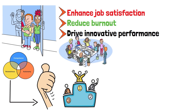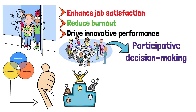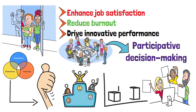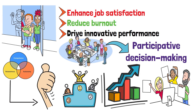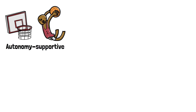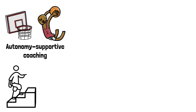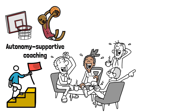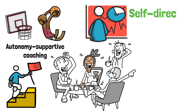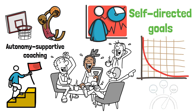Leaders can implement strategies like participative decision-making, recognizing employees' efforts, and providing growth opportunities to create an SDT-aligned work culture. In sports, autonomy-supportive coaching fosters persistence, enjoyment, and optimal performance by emphasizing self-directed goals and minimizing controlling behaviors.